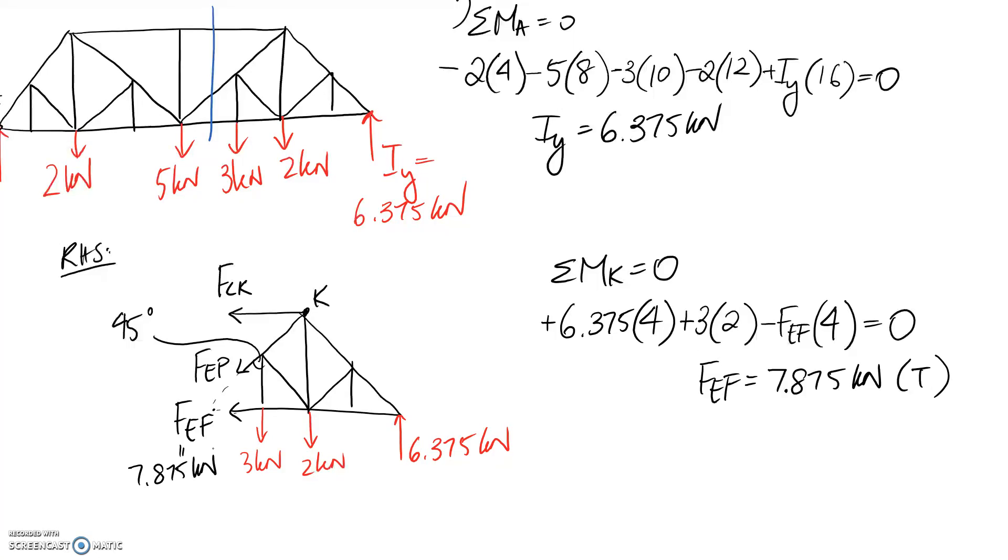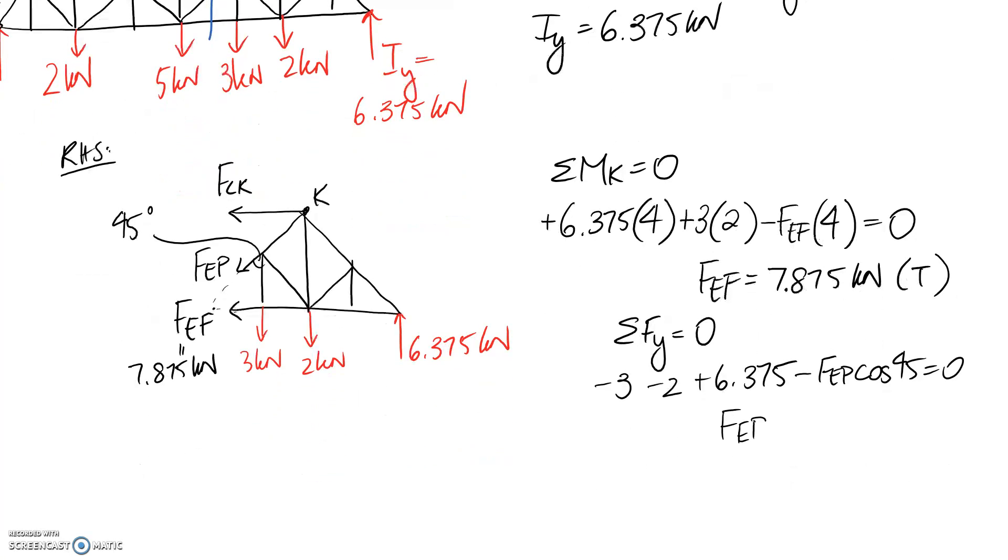Now we have our two other equilibrium equations to apply. I might start with summing forces in the y direction to equal zero, and from that we should be able to work out FEP. In the y direction we have 3 kN going down, 2 kN going down, 6.375 going up, and we have the component of this going down. It's going to be, according to the angle I've got there, cos. If we go through and solve for FEP, I come to 1.94 kN. Again it comes out positive, which means direction was correct. And we drew this pulling away from the joint, so that means it's in tension.